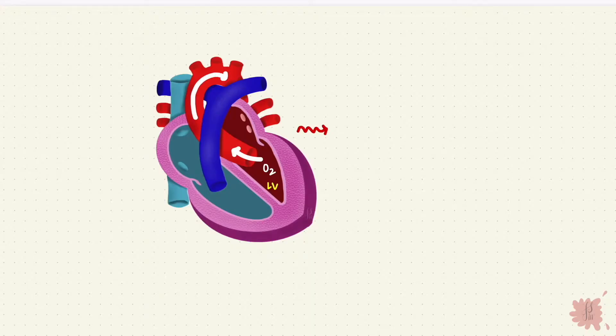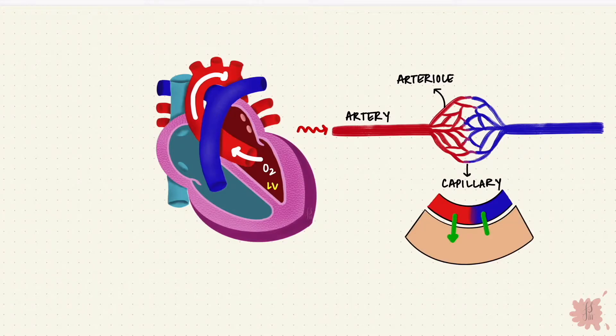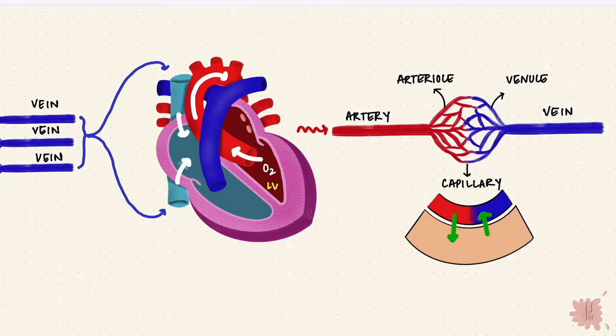Blood then goes through the arteries and then the arterioles and the capillaries, where exchange takes place with tissues. Deoxygenated blood enters the venules and then the veins, and the veins all unite to join the vena cava to drain into the right atrium.